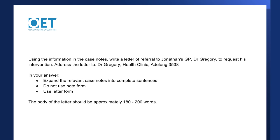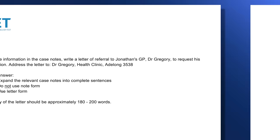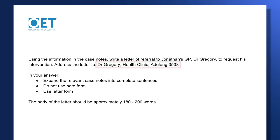We start by copying the address from the writing task found at the bottom of the case notes, arranging it in the top left corner of the letter. Notice that each separate part of the address is on a new line: first the name of the person you're writing to, then the name of the clinic, then the street name if given, then the town or area. Also notice that in the case notes there are commas after Dr. Gregory and after Health Clinic, but in the letter there are no commas — no punctuation — because the letter is a different format.